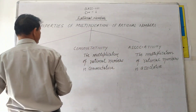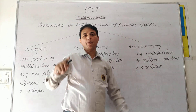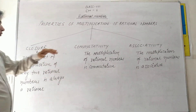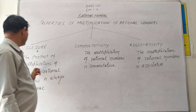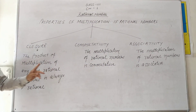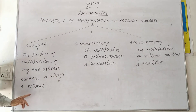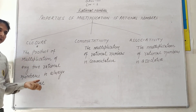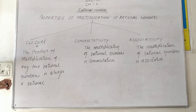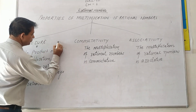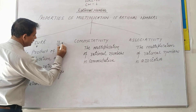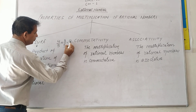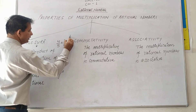Now, properties of multiplication of rational numbers. First is the closure property: the product of any two rational numbers is always a rational number. For example, 4 upon 5 multiplied by 3 upon 5 equals 4 into 3 upon 5 into 5, which is 12 upon 25 — also a rational number. So rational number multiplied by rational number gives a rational number.